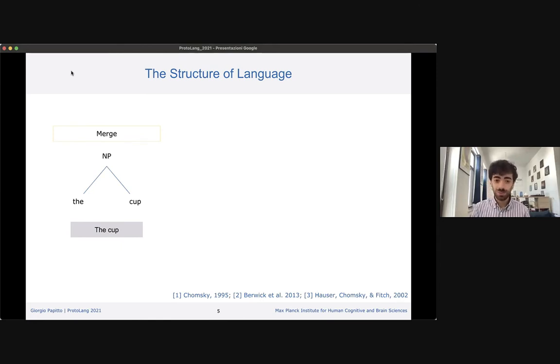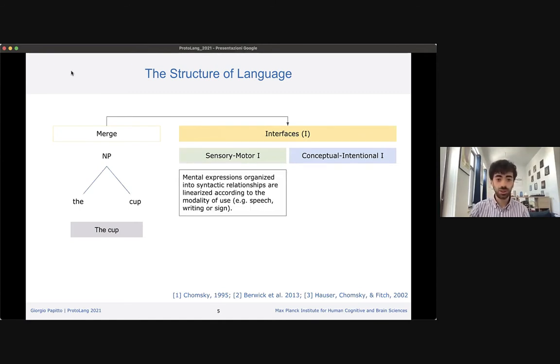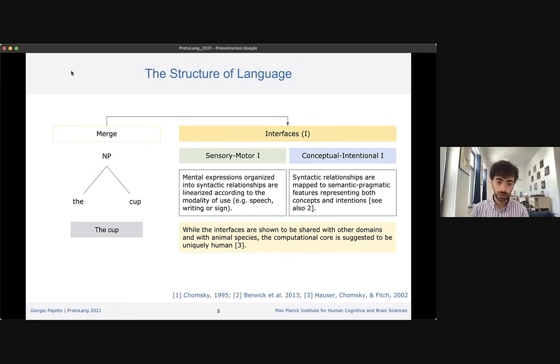Merge, even if it's the basic operation for language, needs to work in cooperation with other systems. It has been postulated that merge needs two interfaces. Through the sensory motor interface, mental expressions are organized into syntactic relationships and linearized for speech or sign. Through the conceptual intentional interface, syntactic relationships are mapped to semantic and pragmatic features. Modern minimalist theories claim these interfaces are shared with other animal species and other domains, while merge per se, the computational system, remains confined exclusively to language.